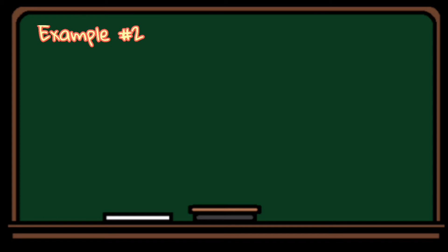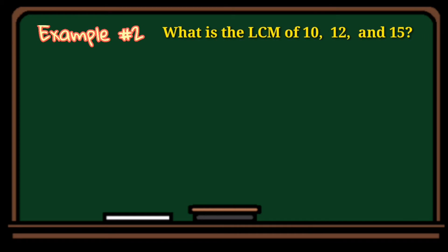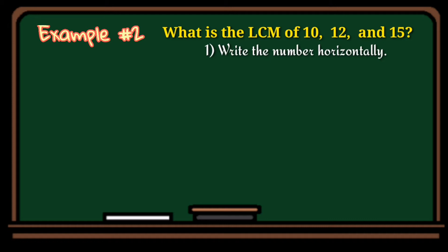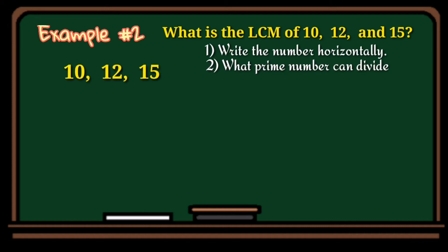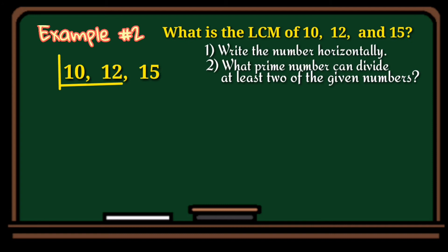Another example: what is the LCM of 10, 12, and 15? Again, write the numbers in a horizontal line. Think of a prime number that can divide at least two of the given numbers — we use 2. So 10 divided by 2 is 5, 12 divided by 2 is 6, and 15 divided by 2 cannot be divided so just bring down 15.